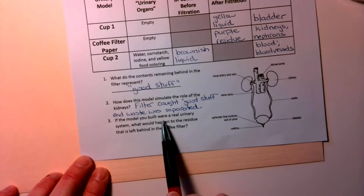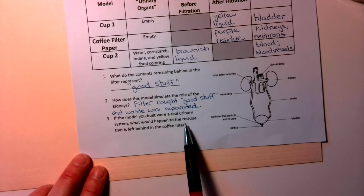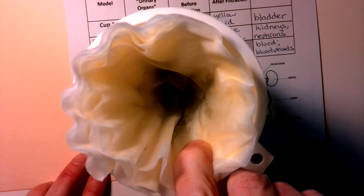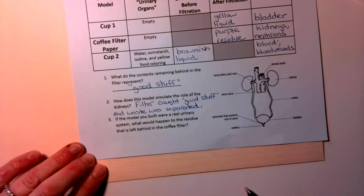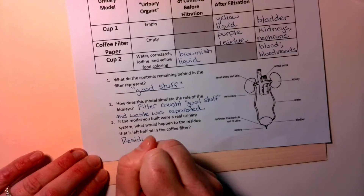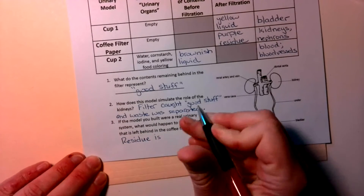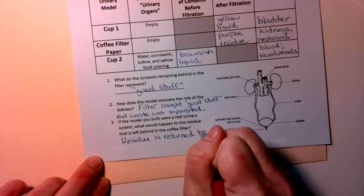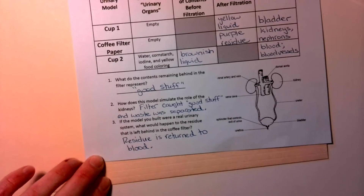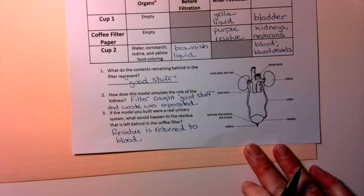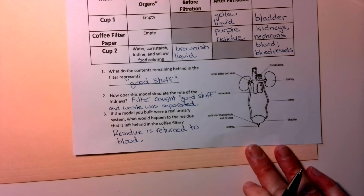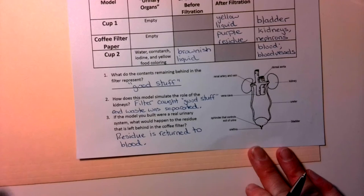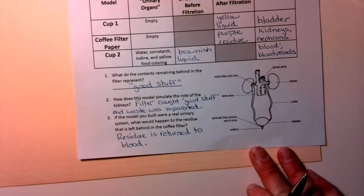So if the model you built were a real urinary system, what would happen to the residue left behind in the coffee filter? This is what the nephrons kept. That residue is returned to the blood, where it circulates throughout your body, delivering the good stuff that's needed. Then that waste goes down through your ureters to your bladder, and then you urinate it out.